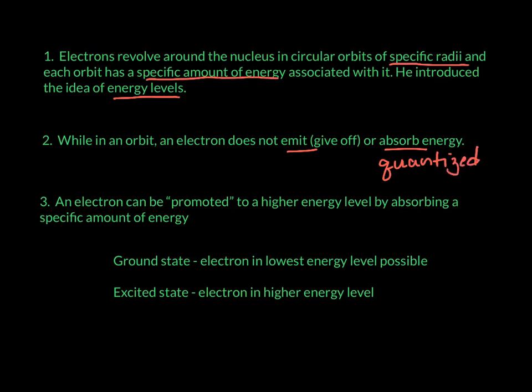An electron can be promoted to a higher energy level by absorbing a specific amount of energy. The lowest possible energy is called the ground state, and any higher energy level is called the excited state.